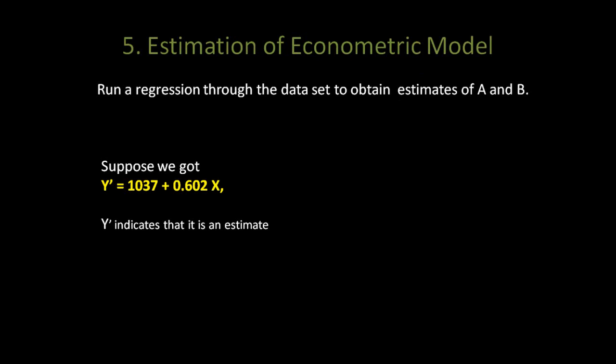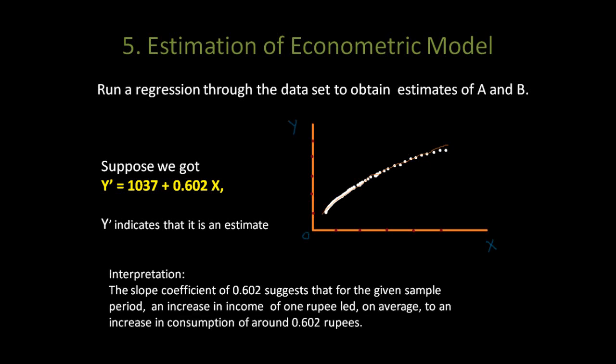We need to know how to interpret this regression line. The slope coefficient of 0.602 suggests that for the given sample period an increase in income of 1 rupee led on average to an increase in consumption of around 0.602 rupees. So the fifth step involves the estimation of the model.